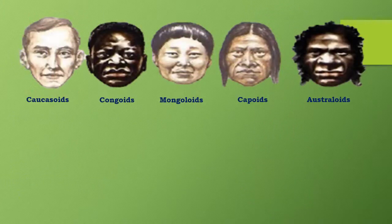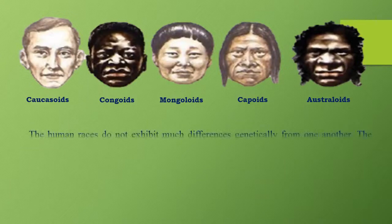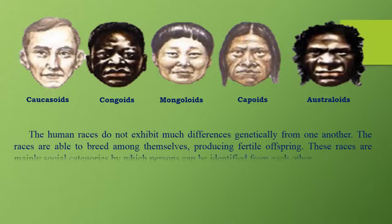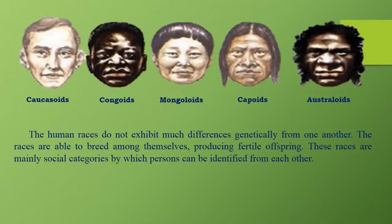The human races do not exhibit much genetic difference from one another. The races are able to breed among themselves, producing fertile offspring. These races are mainly social categories by which persons can be identified from each other.